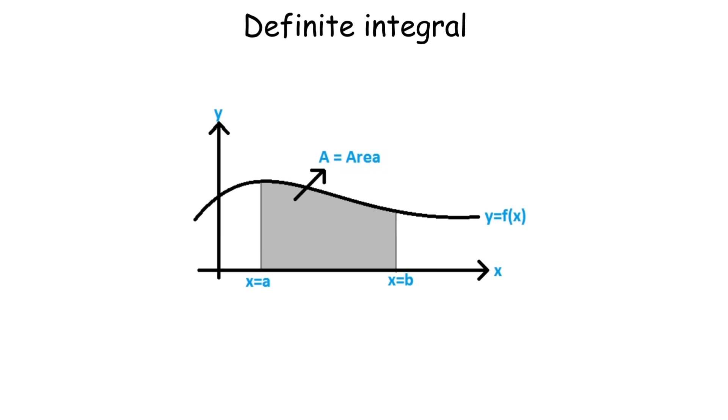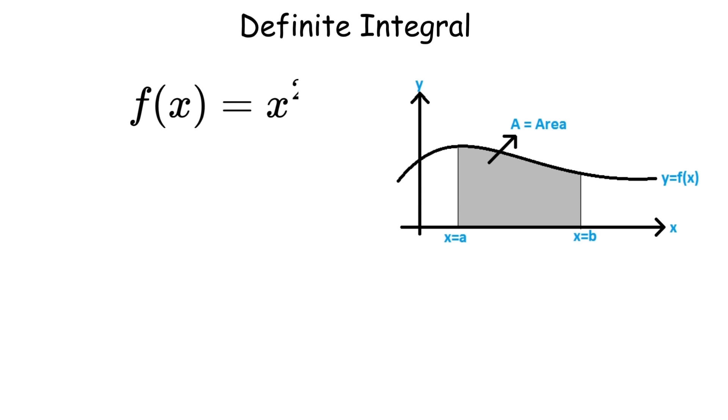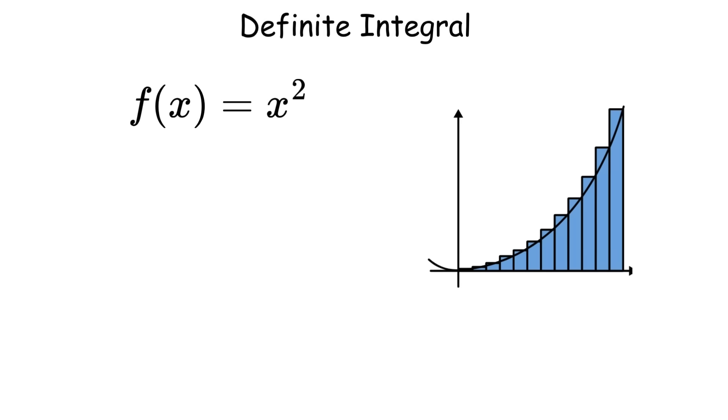Definite integral to find the area under a curve. You take a function like f of x equals x squared and divide the region into rectangles, then add up all their areas. For the integral, you get rectangles with width delta x and height f of x, giving you the Riemann sum.